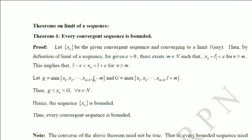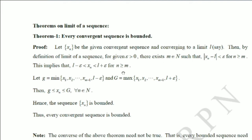For the terms x1 through xm−1, we include l minus epsilon and define g as the minimum of x1, x2, ..., xm−1 and l minus epsilon. Suppose x1 is the minimum of all these values. Then x1 is less than x2, x1 is less than xm−1, and x1 is also less than l minus epsilon. So x1 is less than l minus epsilon, which is less than all terms from xm onward. Therefore all terms of the sequence have lower bound x1.